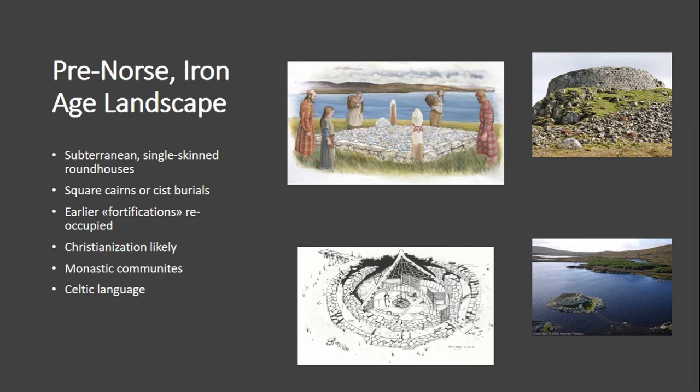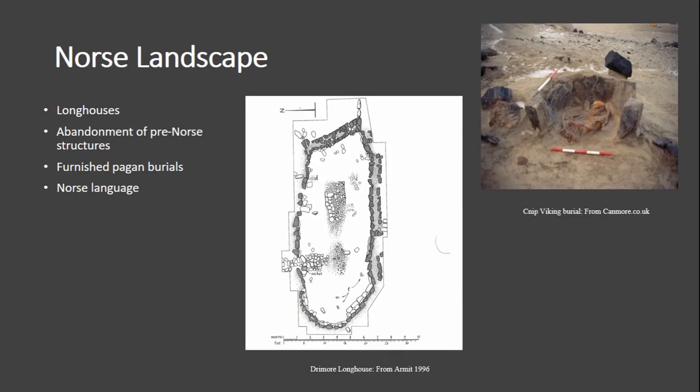However, after the Pictish period, we have a complete change in the landscape. The Norse come around the late 8th century, and you get a complete abandonment of the Pictish settlement sites — a complete end around the late 8th to early 9th century, as far as we can tell through quite limited data.